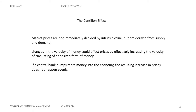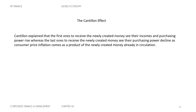If a central bank pumps more money into the economy through quantitative easing, the resulting increase in prices does not happen evenly. Inflation will not happen from one day to another — it happens unevenly. Cantillon explained that the first ones to receive the newly created money, like helicopter money, see their incomes and purchasing power rise, whereas the last ones to receive that newly created money see their purchasing power decline as consumer price inflation emerges.